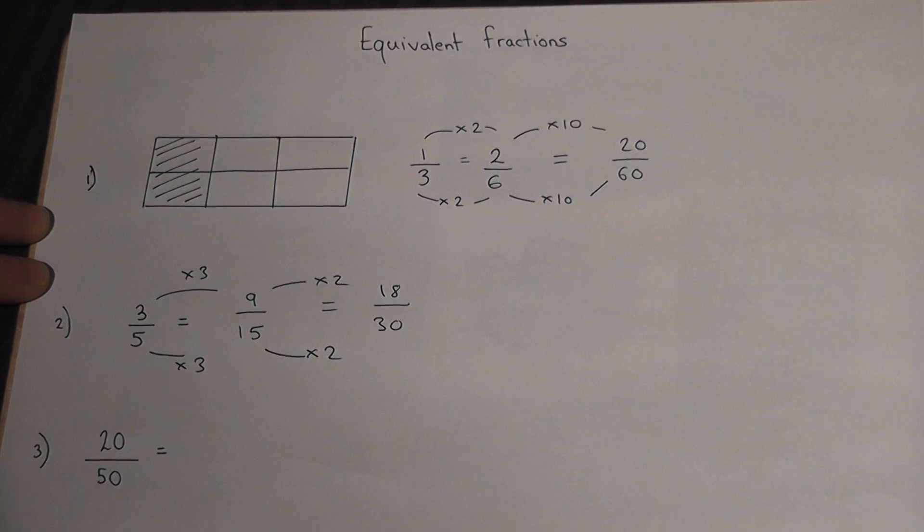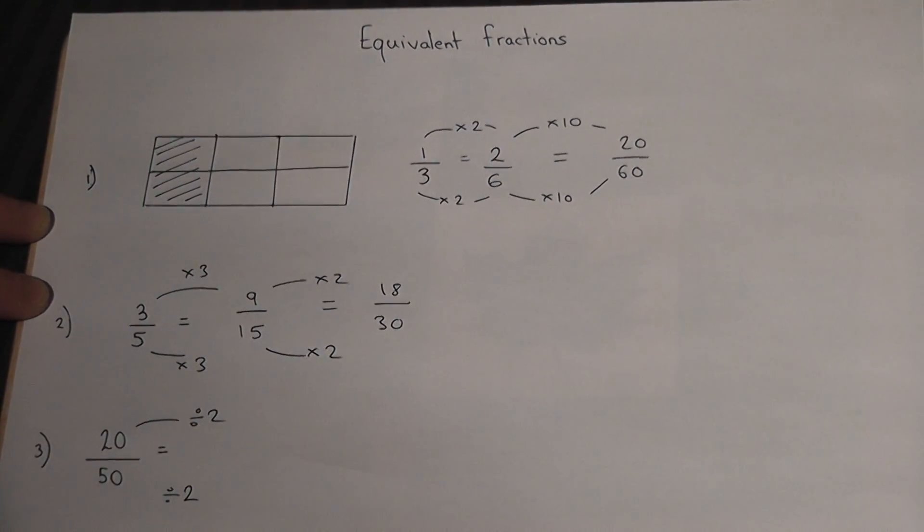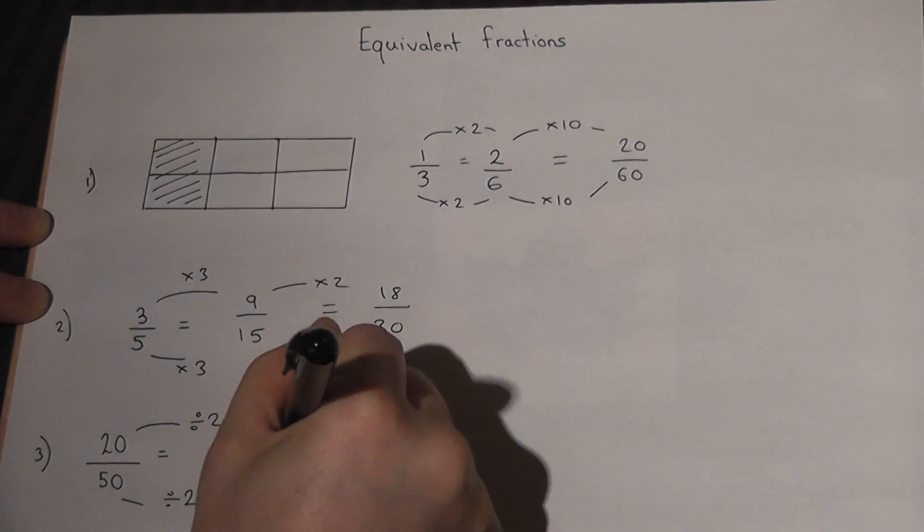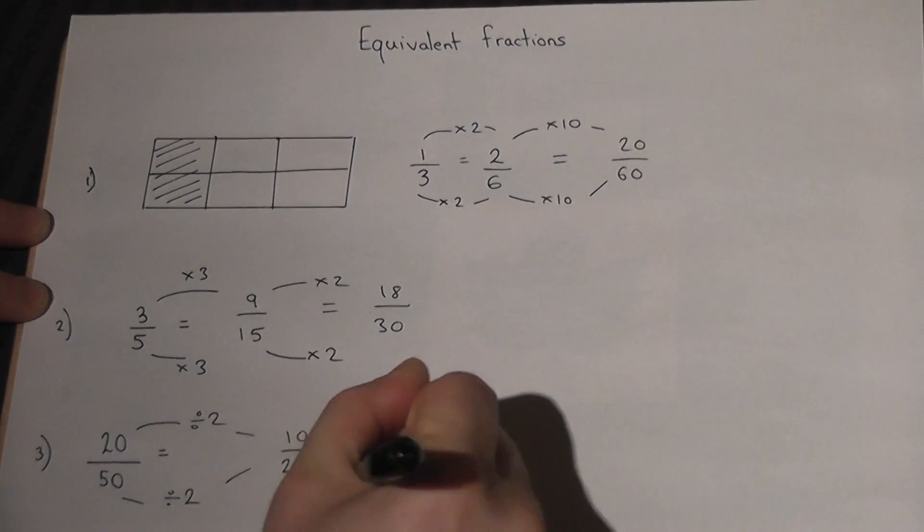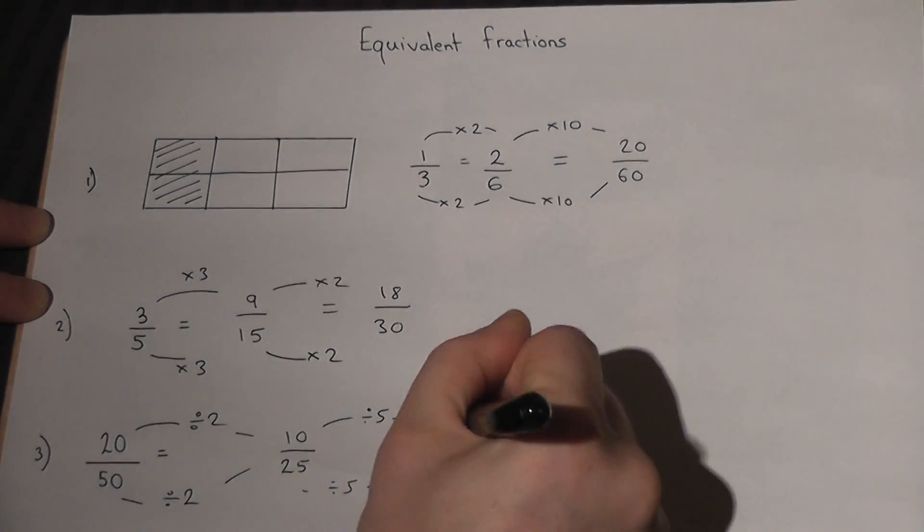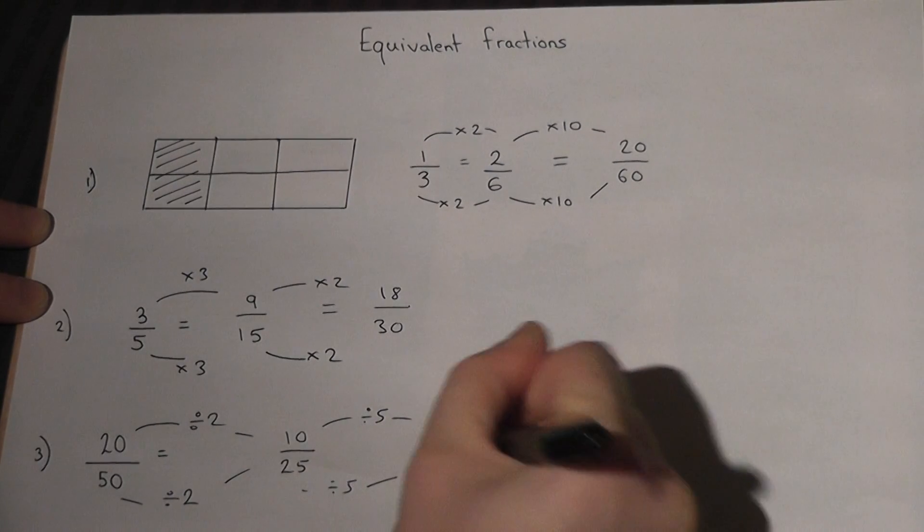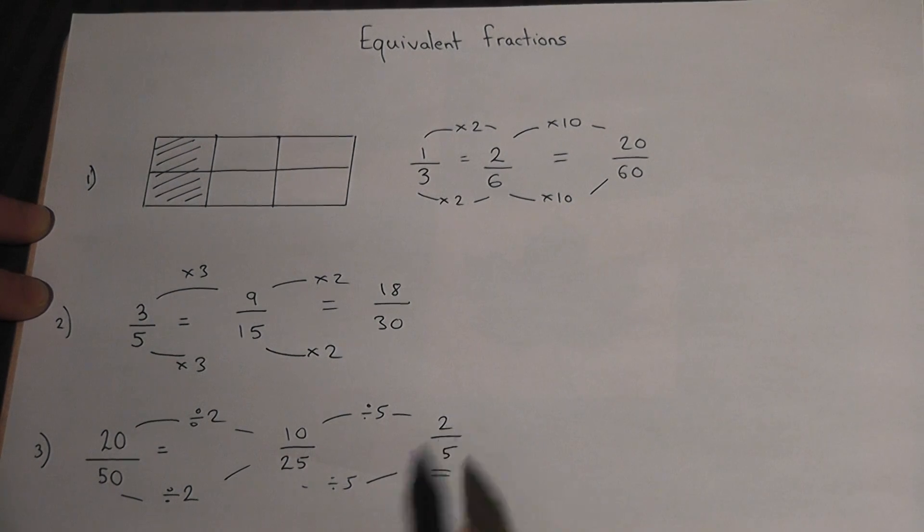Now we can times by the same number, we can also divide by the same number. So for example in number 3, I could divide by 2, both numbers have a factor of 2. If I divide by 2, I get to 10 over 25. These fractions are the same fraction. I could divide further, I could divide by 5 because both these numbers have 5 as a factor. 10 divided by 5 is 2, 25 divided by 5 is 5, and again this is another equivalent fraction. And in fact, this is actually the fraction in its lowest form.